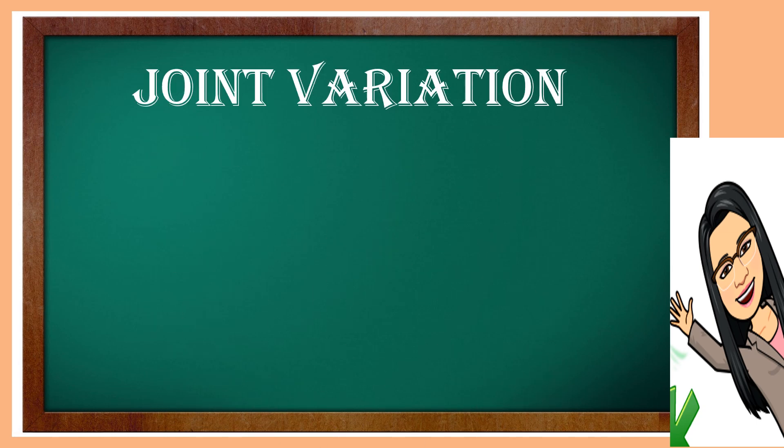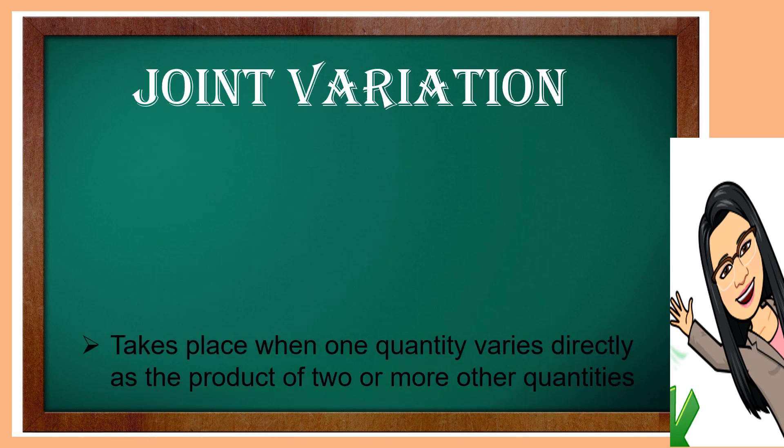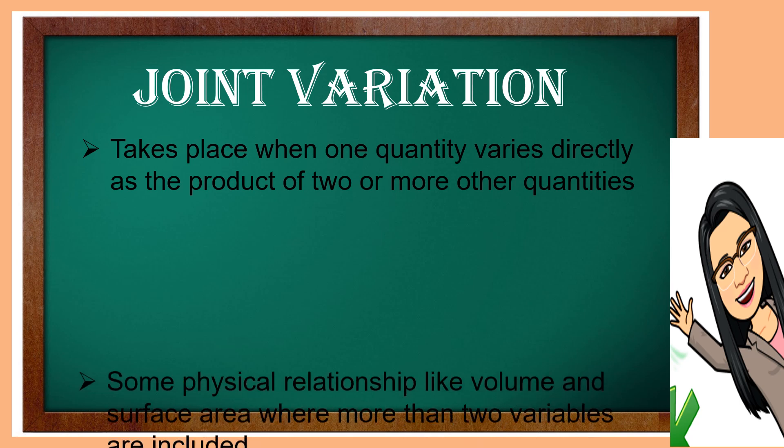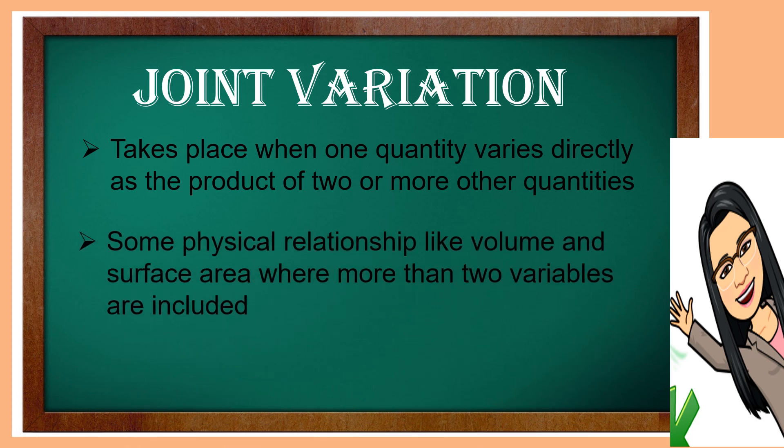Joint variation takes place when one quantity varies directly as the product of two or more other quantities. Meaning, there are more than two variables present in the problem. Some physical relationships like volume and surface area involve more than two variables.